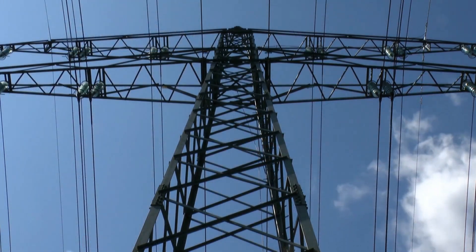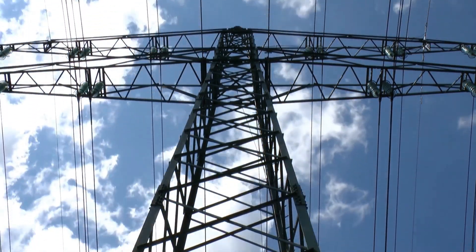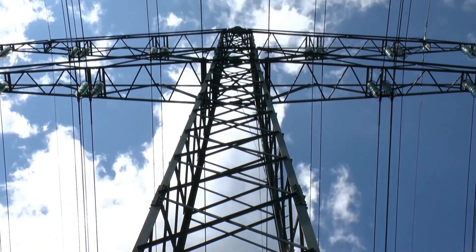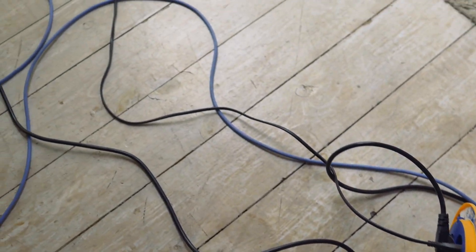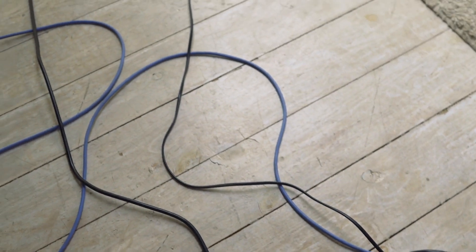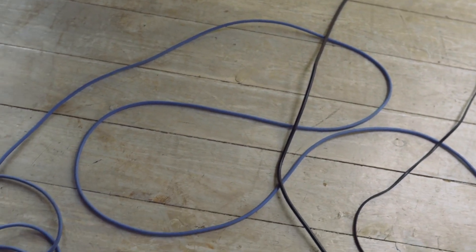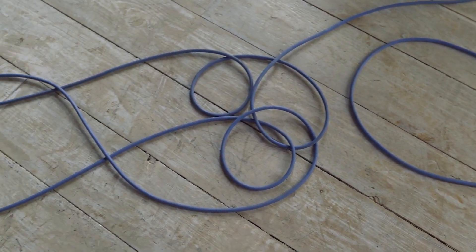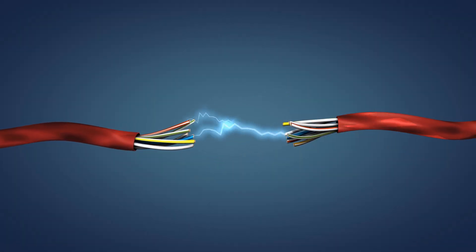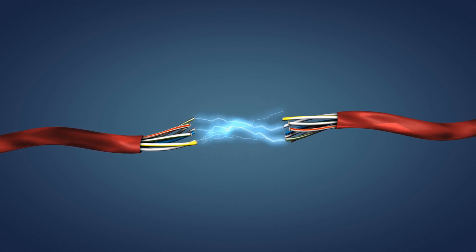Electricity flows through some materials but not through others. We will explore the difference between conductors and insulators. Conductors, like metals, allow electric current to pass through them easily, while insulators, like plastic or rubber, prevent the flow of current. Understanding how and why this happens is key to building and using electric circuits safely and effectively.